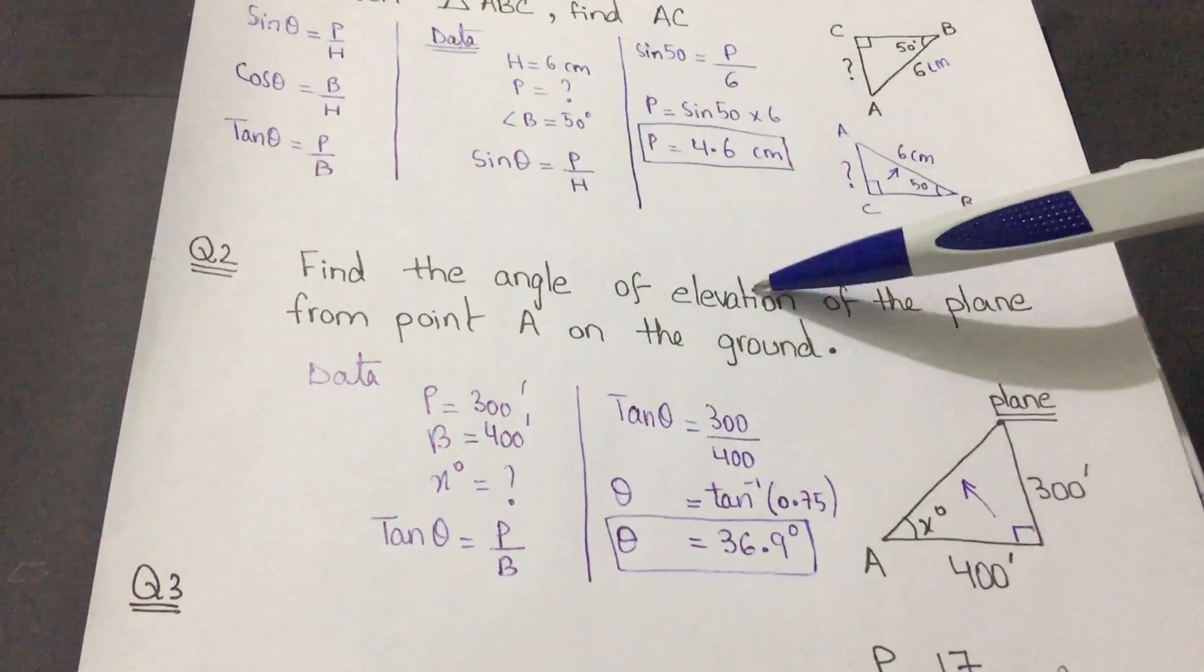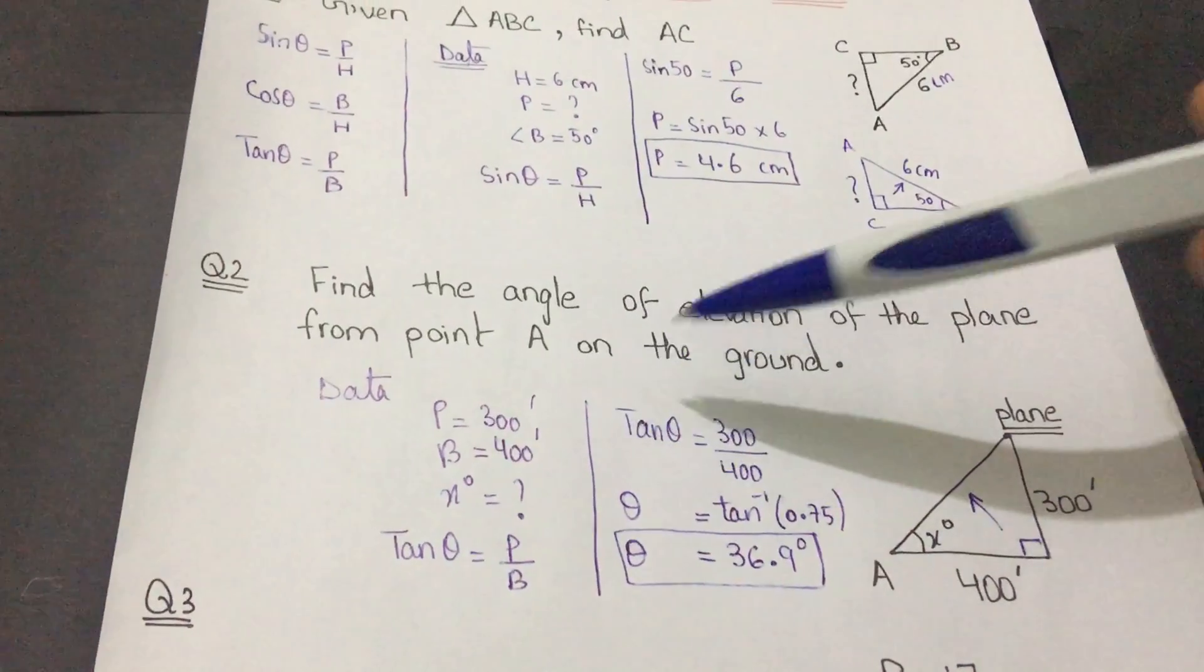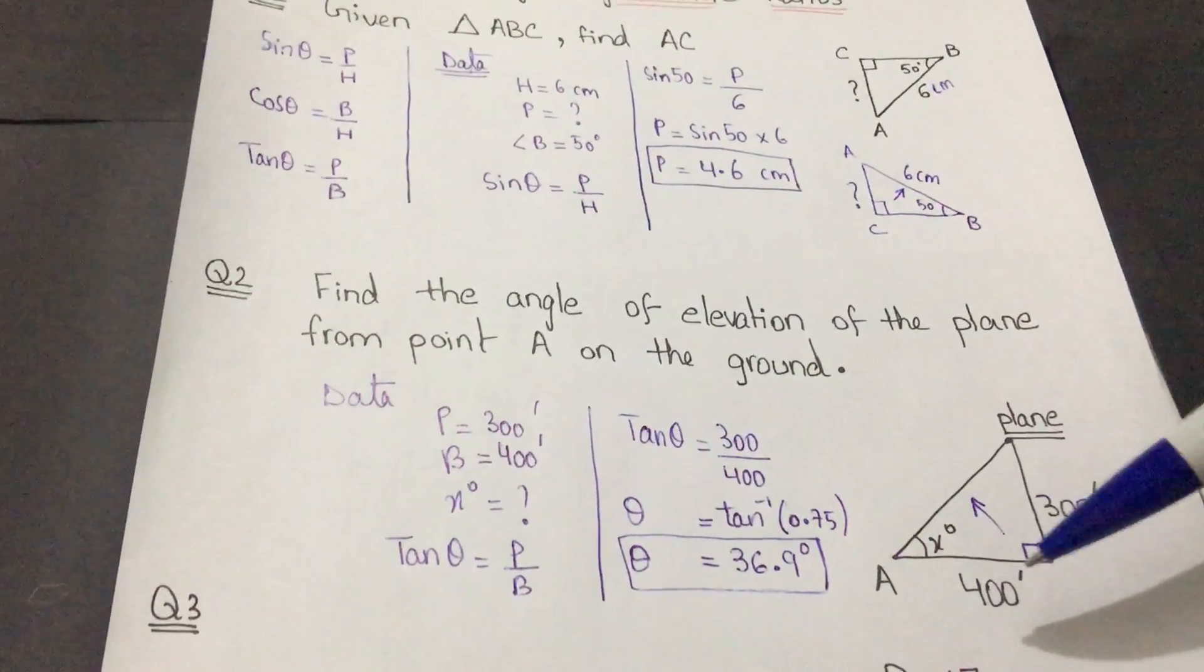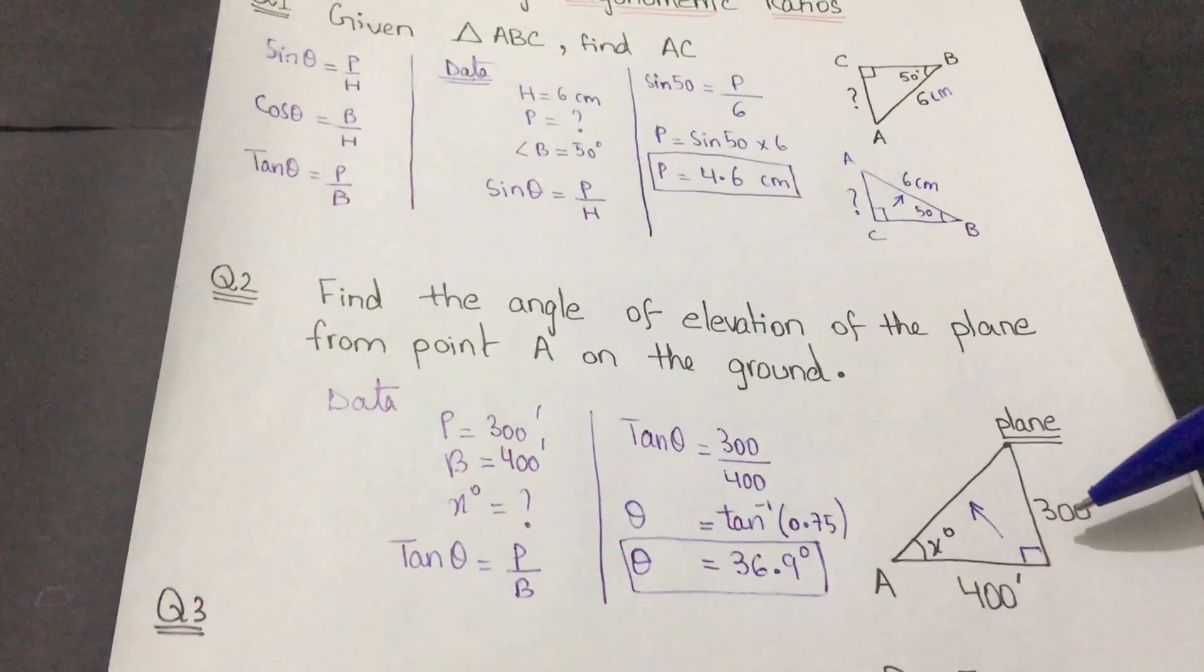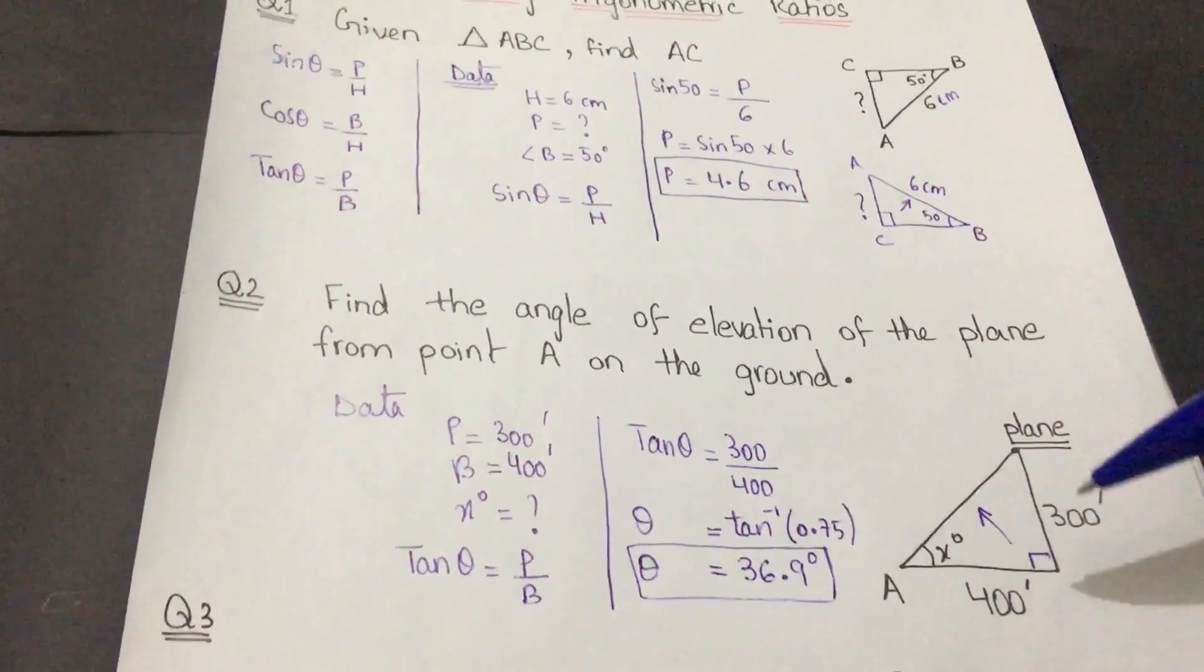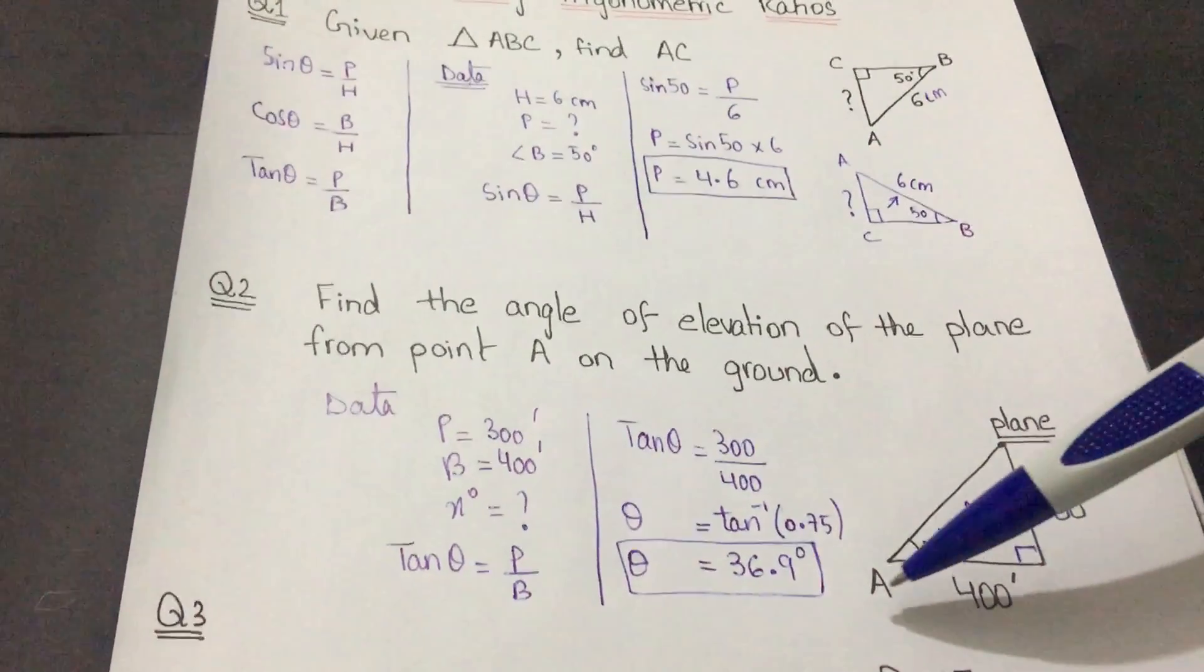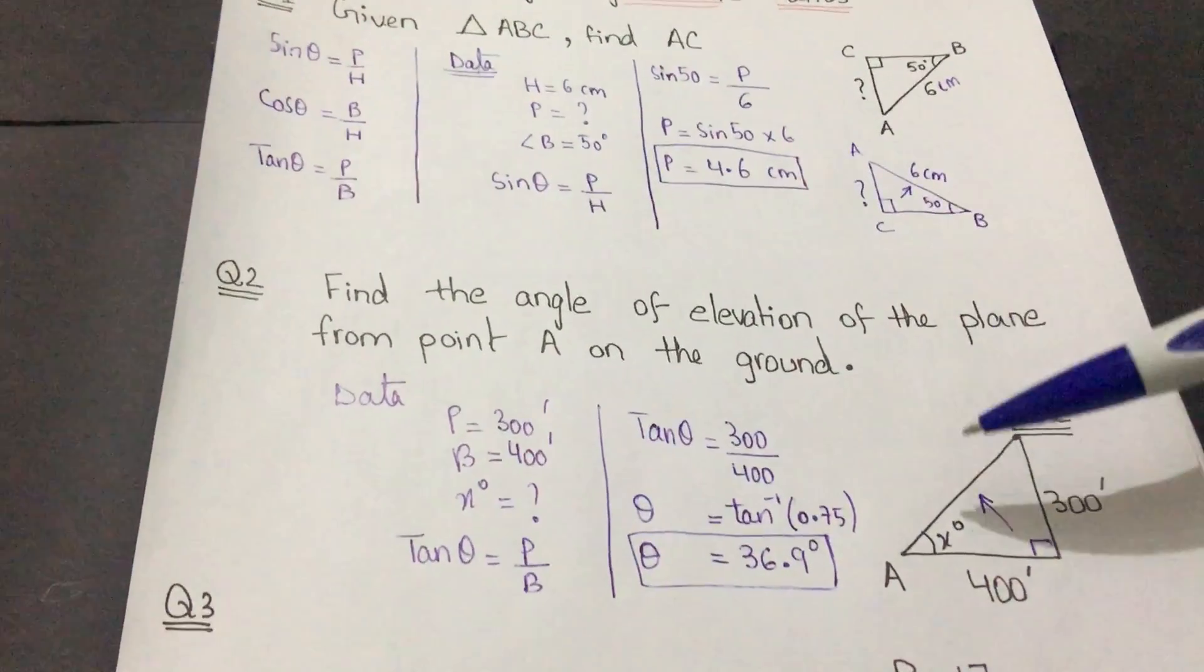Question number two: we have to find the angle of elevation of a plane from a point A on the ground. This is the figure of this question. The plane is at a height of 300 feet, and it is at a distance of 400 feet from point A.